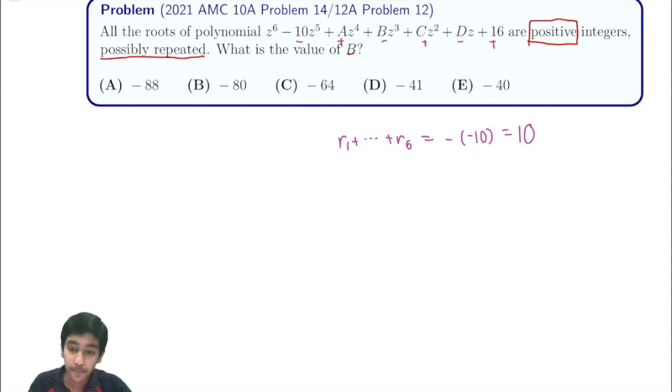But we also know by Vieta's formula that the product of the roots, R1 times R2 times R6 is 16. So we have to use these conditions along with the fact that the roots are positive integers somehow. How can we do this?